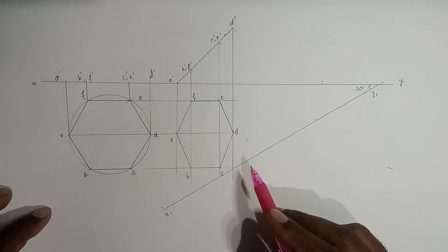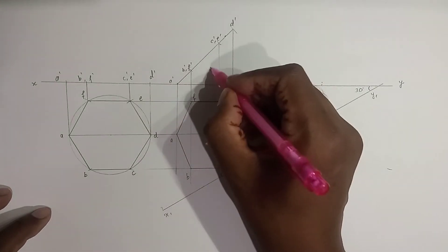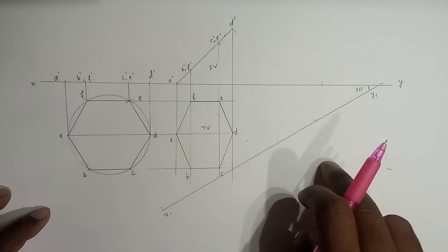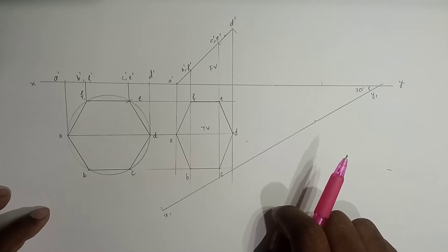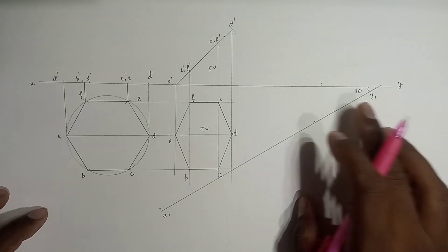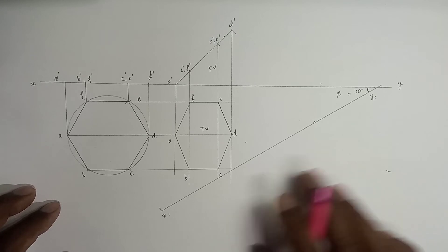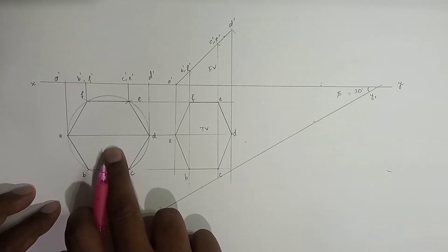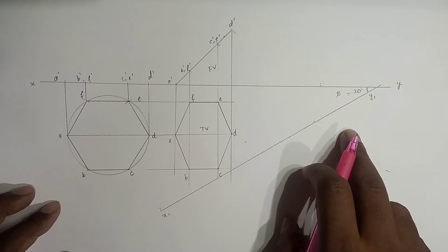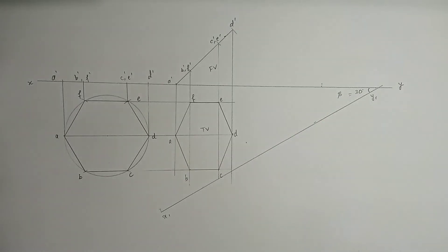Since this is X1Y1, the distances we will take from XY. Here we have the previous front view and the top view. The diagonal in the top view makes an angle of 30 degrees with VP or XY. The top view makes an apparent angle with XY, so this 30 degrees is directly equal to beta — no issue. But if the diagonal is parallel to HP, that is the true length, and it makes an angle of 30 degrees, then you have to calculate beta and mark that length.